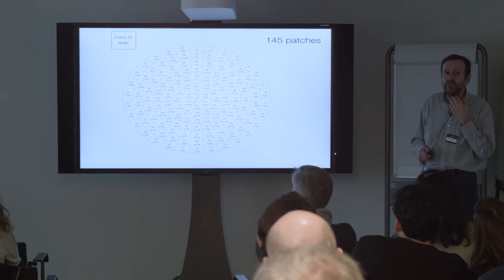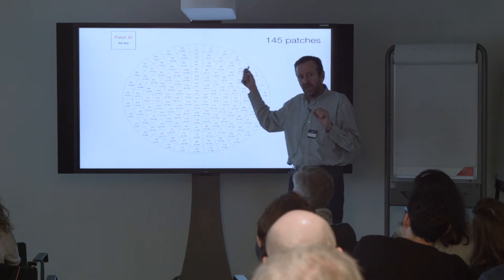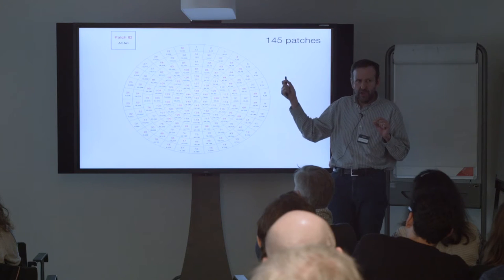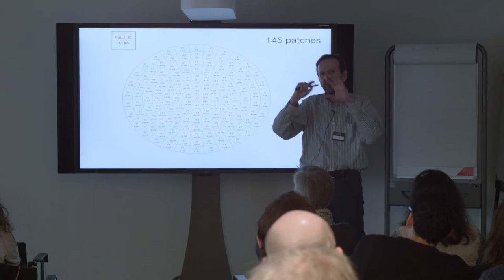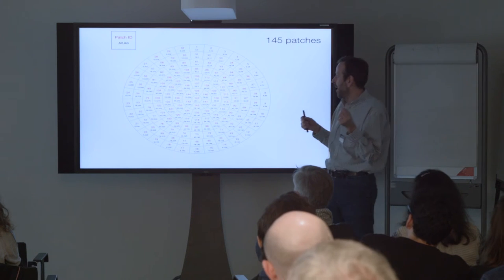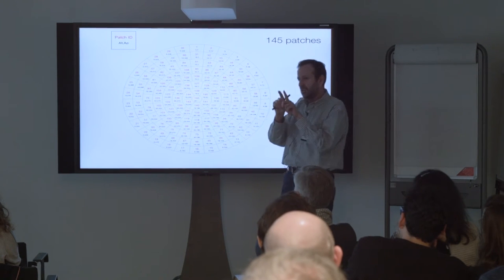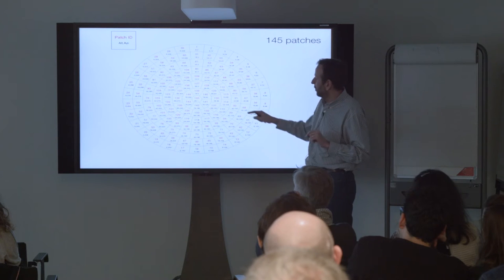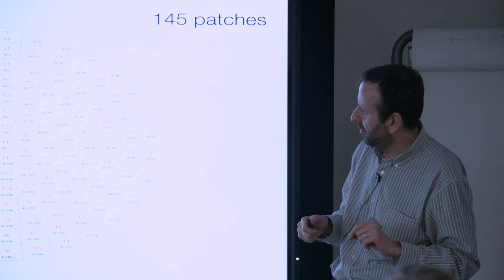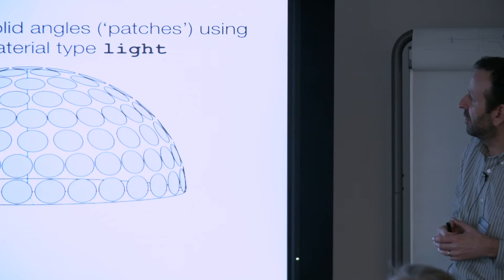The patch scheme that we use is nearly always the 145 Tregenza scheme. This was devised by Tregenza I think in the year just before the international daylight measurement program when they were looking for a patch scheme that would work with sky scanning devices. It divides up the sky and you can fit in an 11 degree solid angle in each of these. So 145 patches and there it is sort of shown laid out in a projection here, here you see it in 3D.